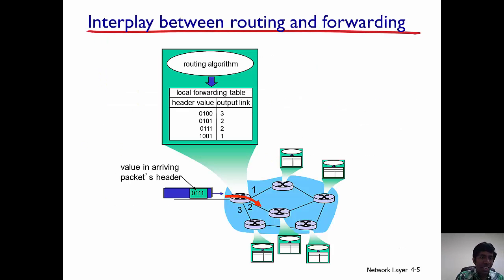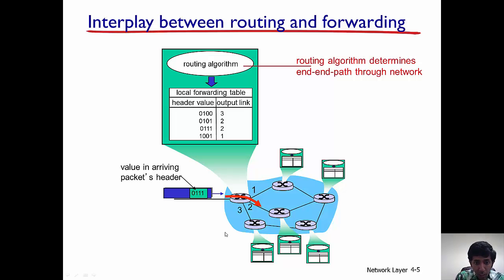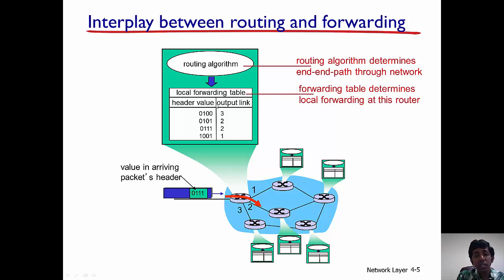Routing and forwarding are deeply related. The routing algorithm determines the end-to-end path in a network, and once it has determined that path to enable a packet to go from source to destination, it establishes a set of rules at each of the intermediate routers. For example, this router has three outgoing interfaces: one, two, and three. A packet that arrives at this router can go out of any of these interfaces. The routing algorithm, depending on where the destination is and the packet's header, determines which output link the packet should be sent on — that is the process of forwarding.